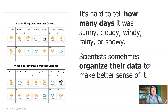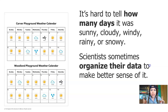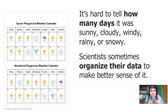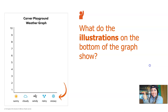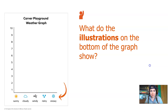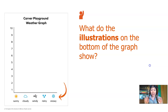So here we have both of the different schools' weather data. It's hard to tell how many days it was sunny, cloudy, windy, rainy, or snowy. So here's what scientists do — scientists sometimes organize their data so they can see it better, understand it better, and make sense out of it. And since we are scientists, we are going to organize our data. This is called a graph. Have you ever heard of a graph before? Scientists use graphs all the time. We are going to use this graph to organize the data about the weather at Carver Elementary School first.